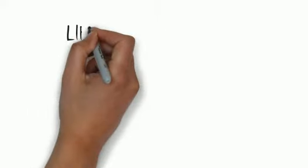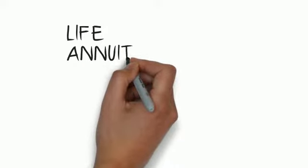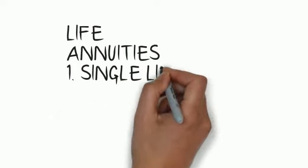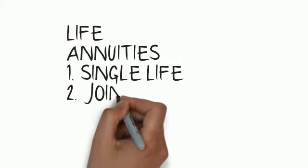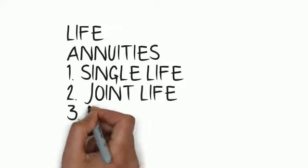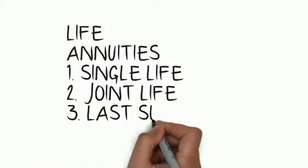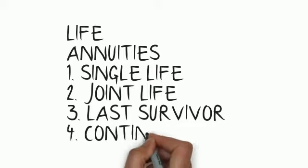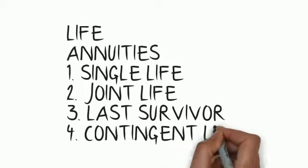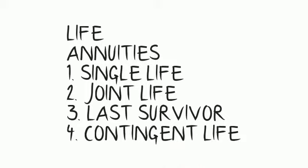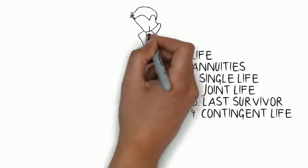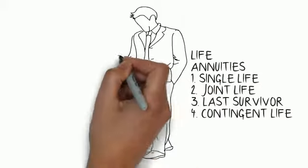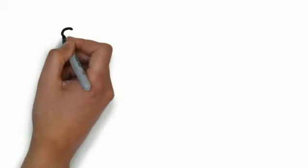Coming down to life annuities, we are looking at different types. There is the single life annuity, the joint life annuity, and the last survivor — in other words, the joint life last survivor annuity. And then there is the contingent life annuity. If you are looking at the contingent life annuity, you are also looking at different types of contingencies — really complicated types of annuities where it pays only in certain clearly defined circumstances.